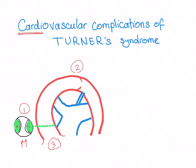Number two is coarctation of the aorta, which is covered in a separate video linked in the description. Here we have pre-ductal — i.e., prior to the ductus — pre-ductal coarctation of the aorta.